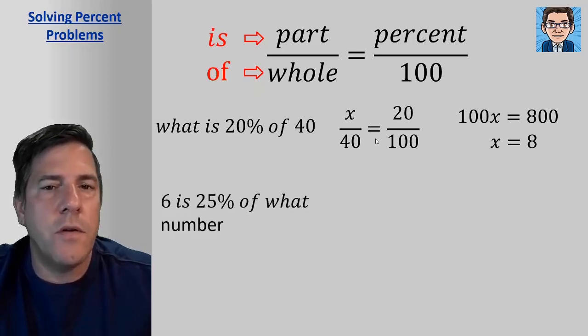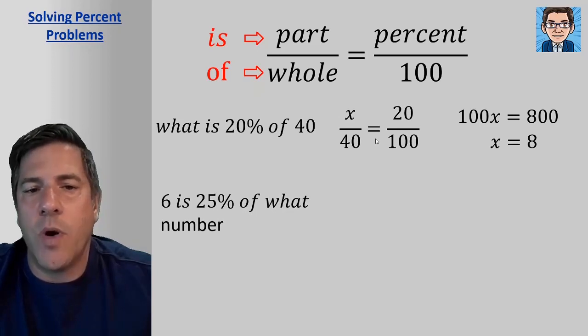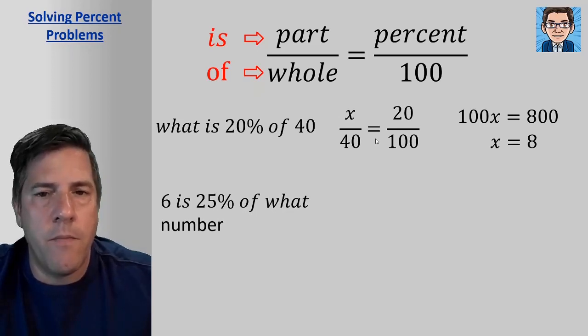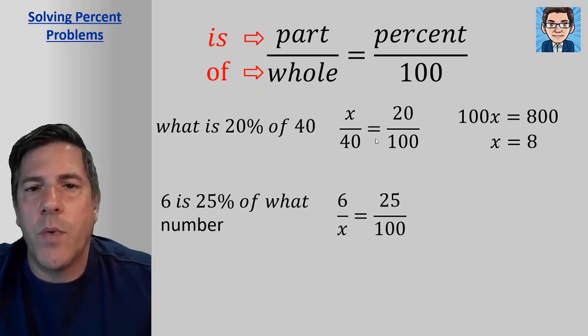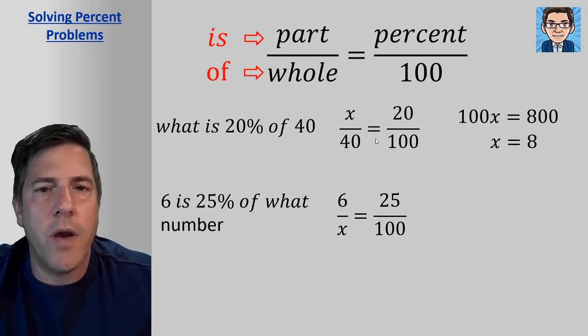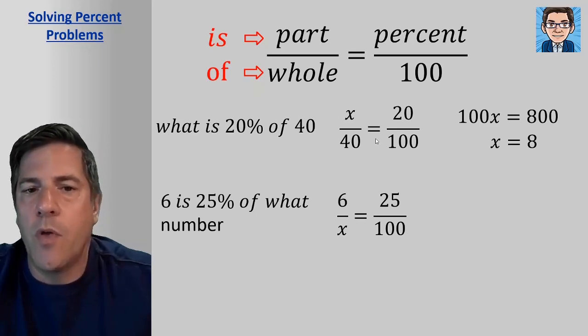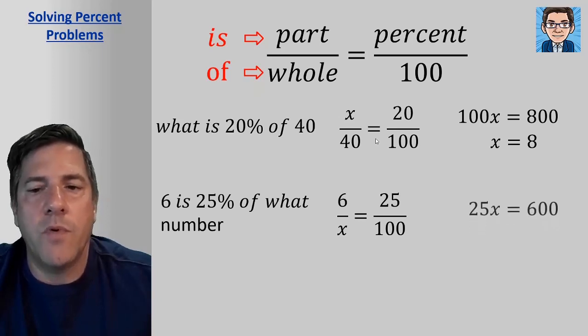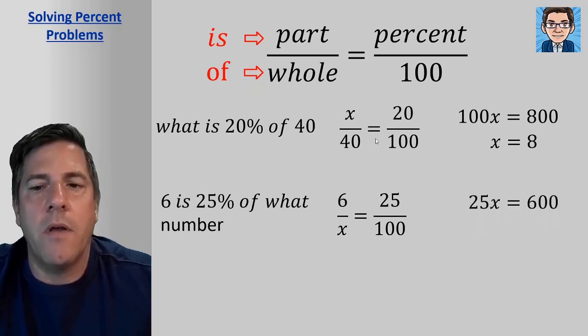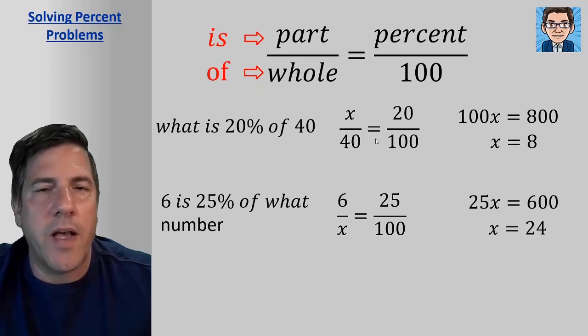Another version of the problem. 6 is 25 percent of what number? So we would set up 6, we know what the part is. Here, we don't know what the whole is, so the variable here is going to be in the denominator for the whole, because we don't know of what number. And we do know the percentage is 25. And again, we cross multiply 25x equals 600. Divide by 25, and we get x equals 24.